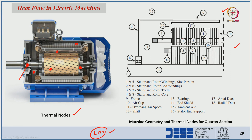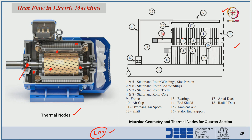Thermal node 1 represents the stator windings and thermal node 2 represents the stator end winding. Node 3 is the stator teeth and node 4 is the stator core. So the stator part is divided into four nodes: stator winding, stator end winding, stator teeth, and stator core.